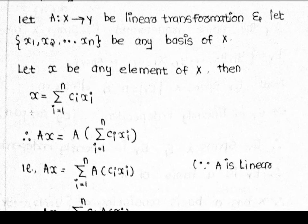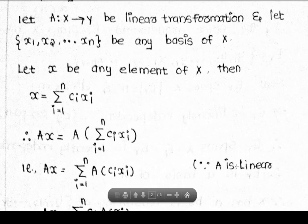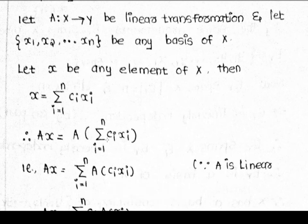For any x belonging to X, x = summation i=1 to n of c_i · x_i. Then A(x) = A(summation i=1 to n of c_i · x_i). Since A is linear, A(x) = summation i=1 to n of A(c_i · x_i).